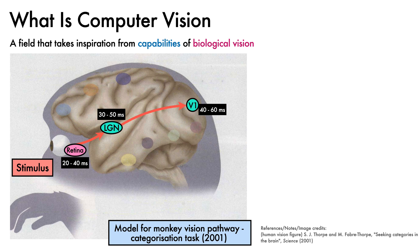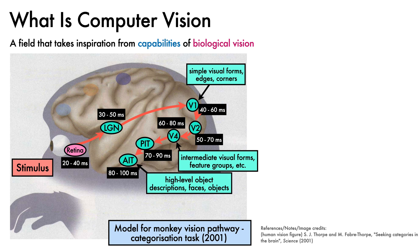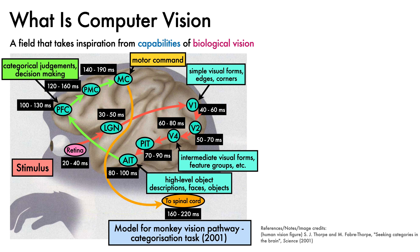From here, the signal is sent to an area known as V1, where initial processing of simple visual forms, edges and corners takes place. The signal moves next onto V2 and V4 in the ventral pathway, where intermediate visual forms are processed, and then onto the posterior inferior temporal cortex and anterior inferior temporal cortex, where high-level object descriptions, faces and objects are processed. This then maps to the prefrontal cortex, a site for categorical judgements and decision making, then the premotor cortex and primary motor cortex, responsible for motor commands. There is a journey taking perhaps 20ms to the motor neurons of the spinal cord, and finally out to the finger muscle that implements a response.